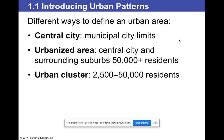An urbanized area is a central city and surrounding suburbs of 50,000-plus people. We are way beyond this where we're at — we have many, many people. Pomona is definitely an urbanized area at around 162,000. An urban cluster is between 2,500 and 50,000 residents, so Claremont would classify as an urban cluster at around 40,000.